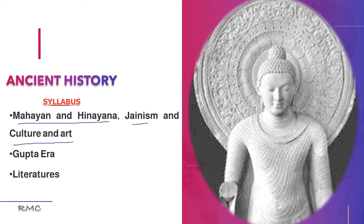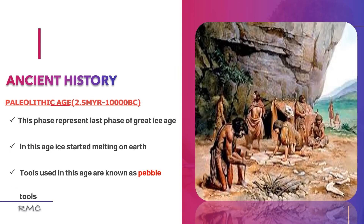The next topic is the Gupta Era, which is called the golden era of India, because in each and every field of human life — science, medicine, metallurgy, art, culture — there were great innovations and achievements in India. That is why this era is called the golden era. We will also study the literature of this period, such as Kalidasa and Varahamihira, since direct questions about the authors of works of this period are often asked in exams.